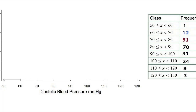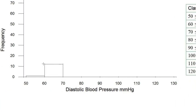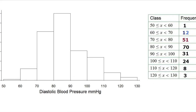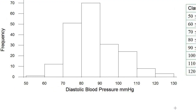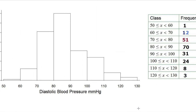For the class 50 to 60, I'll make a rectangle of altitude 1, and for the next class I'll make a rectangle of altitude 12. In this way I'll go ahead and finish making the histogram. This is how to make a histogram manually, but most often you will use a computer package to do so. For those who needed to see how to make a histogram, I just gave this illustration.